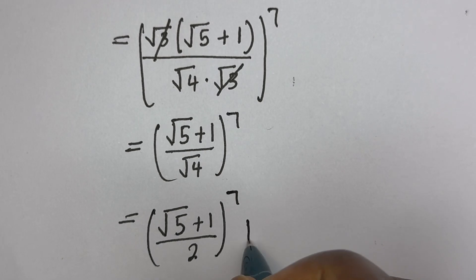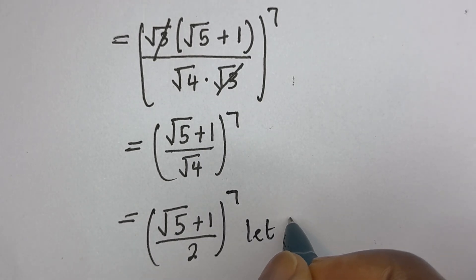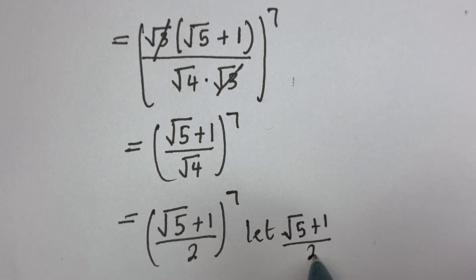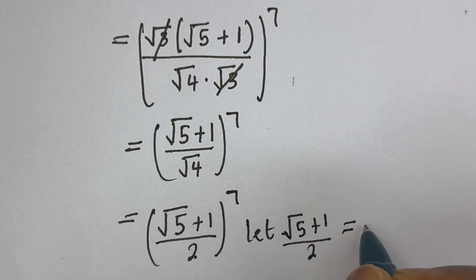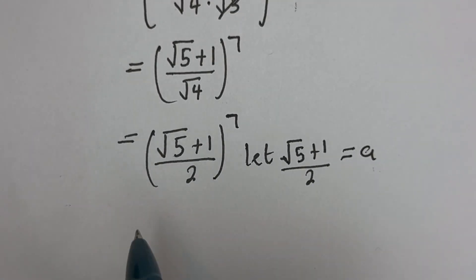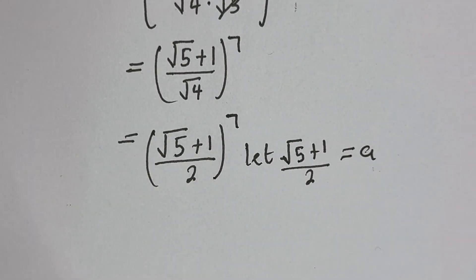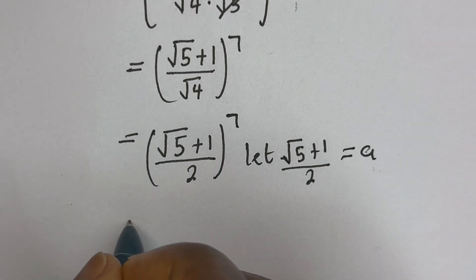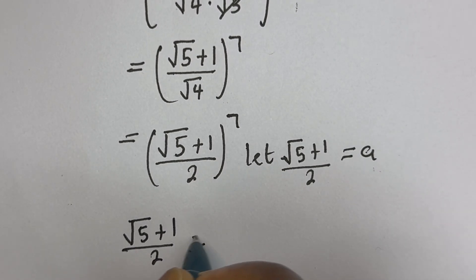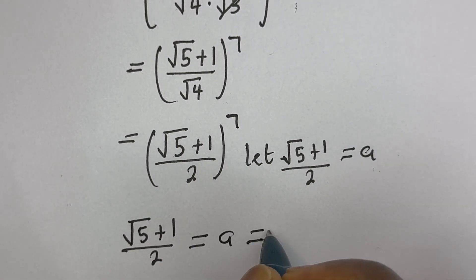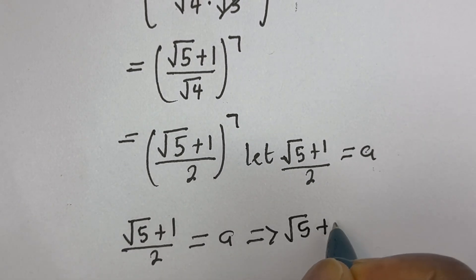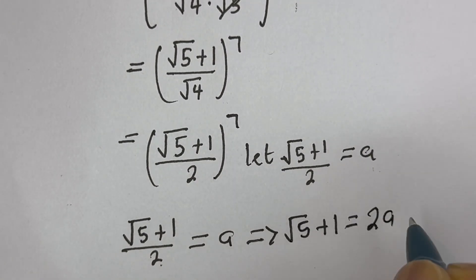Now let a equal square root of 5 plus 1, divided by 2. This means root 5 plus 1 is equal to 2 times a.